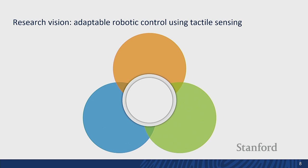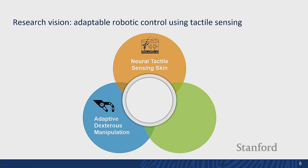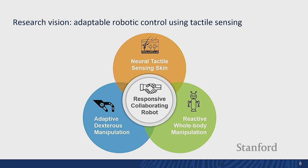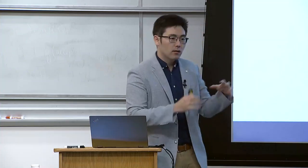In my new position at UC Santa Cruz, I'm planning to work on a neural tactile sensing scheme that enables adaptable dexterous manipulation and reactive whole-body manipulation. From this robotic system, I believe we can achieve a responsive collaborating robot that can work with us and work with each other by making contacts together, even on our bodies.